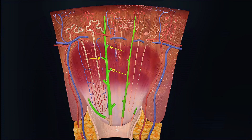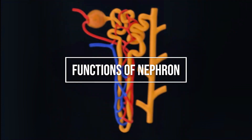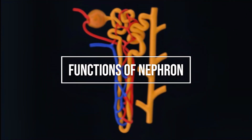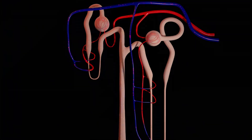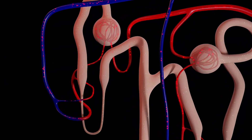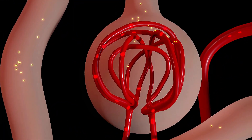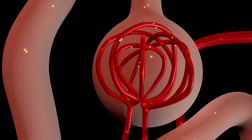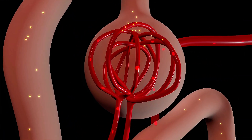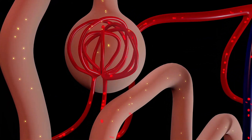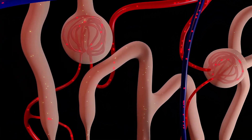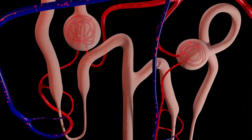Now that we understand the structure, let's understand the function of the nephron. The nephron's job is to filter blood and convert waste materials into urine. Let's see how nephrons perform this function.